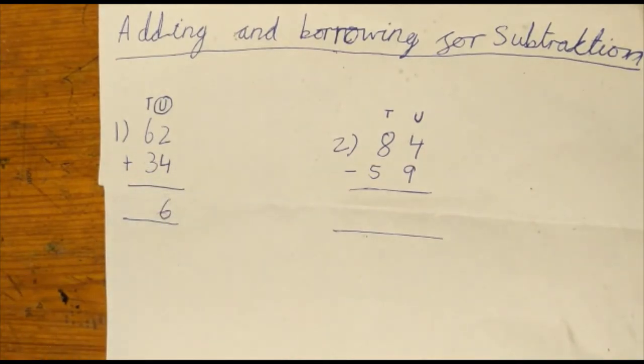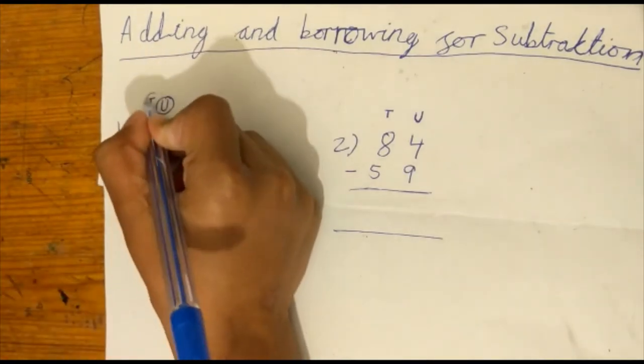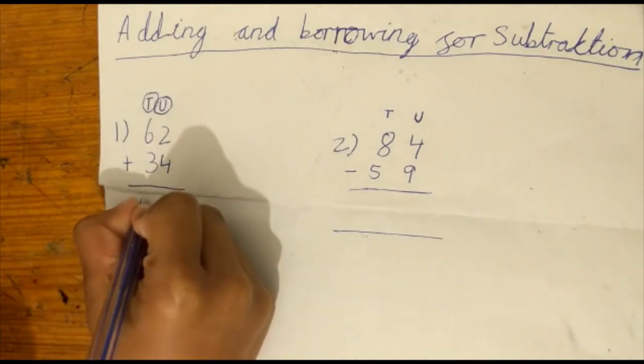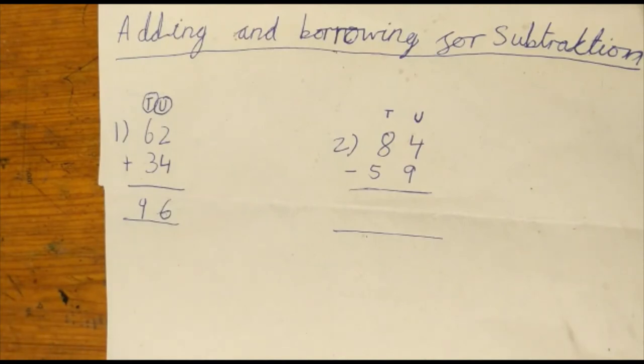And then we're going to go on the tens. So I'm going to circle the T sign. And then 6 plus 3 is 9. So I'm going to put 9 next to the 6. So the answer is 96.